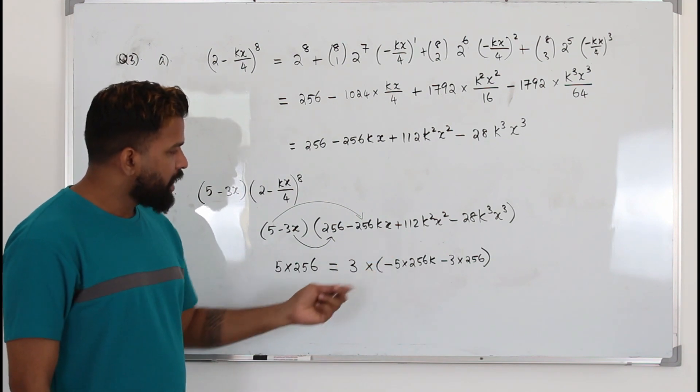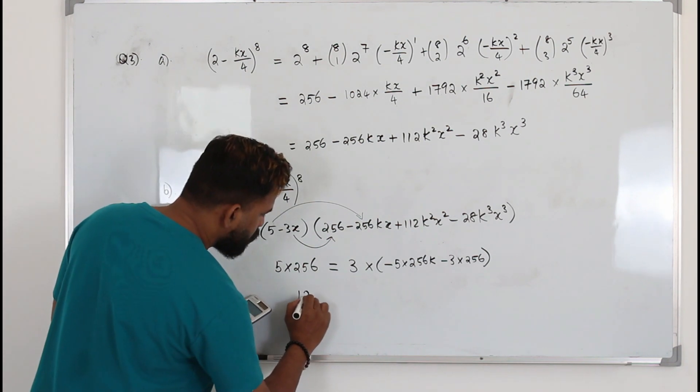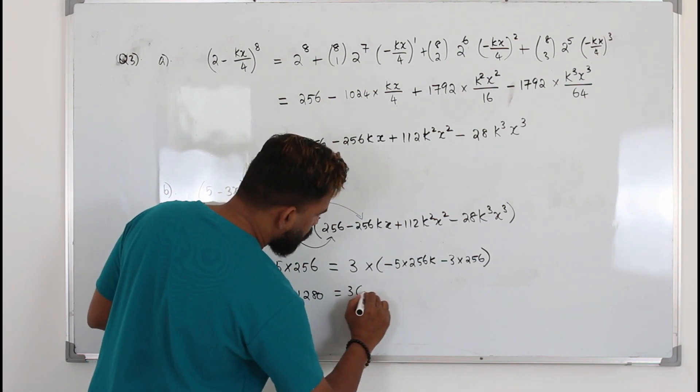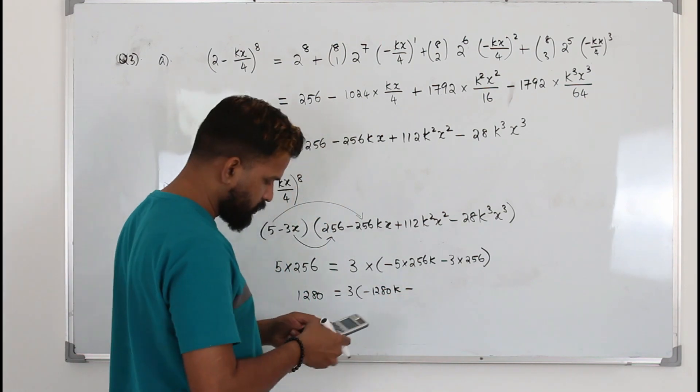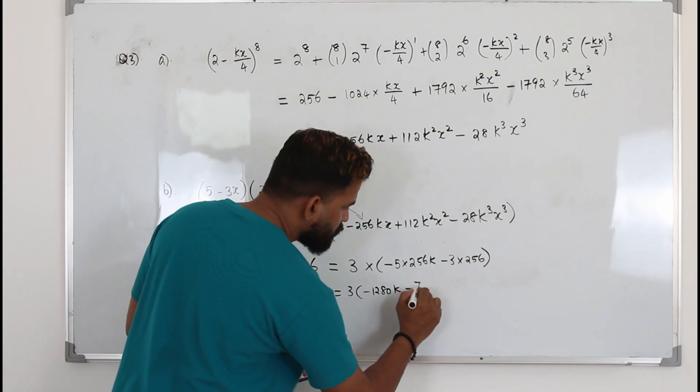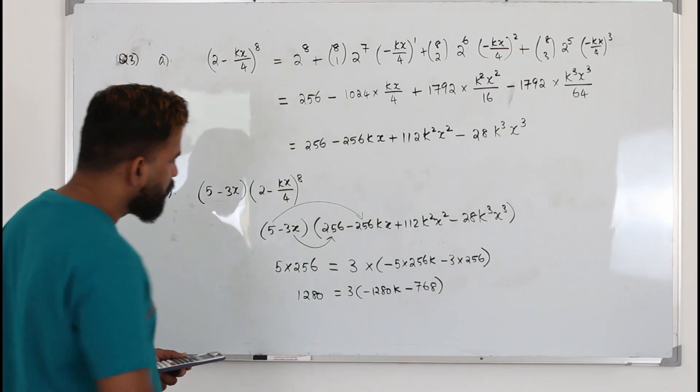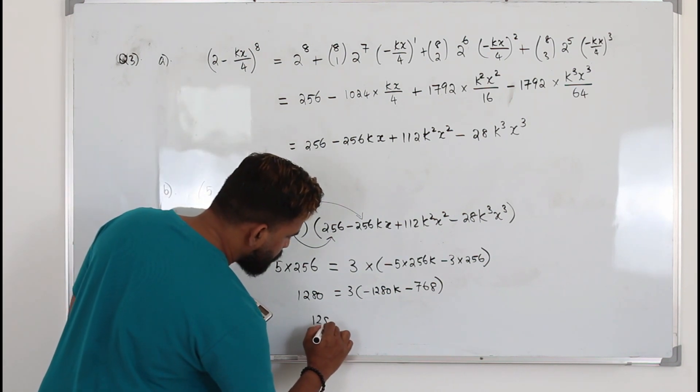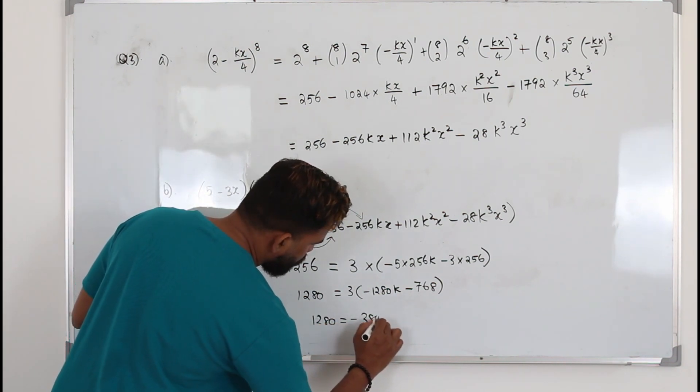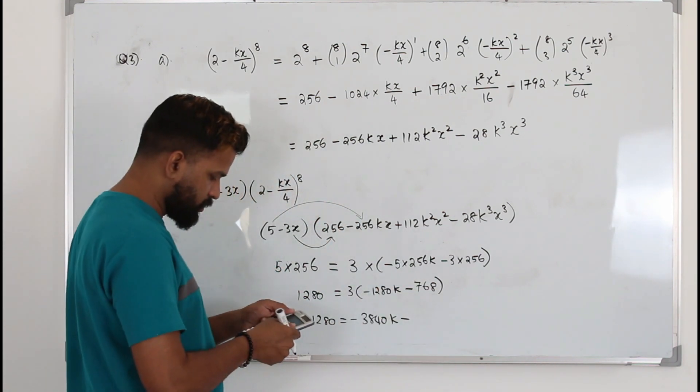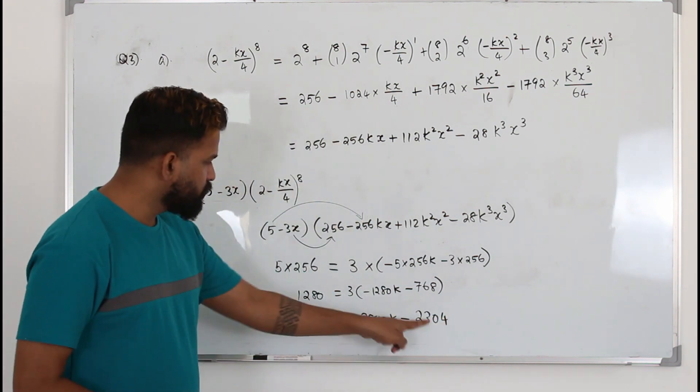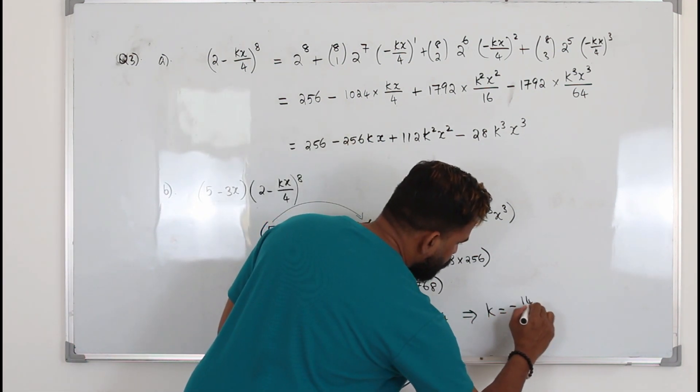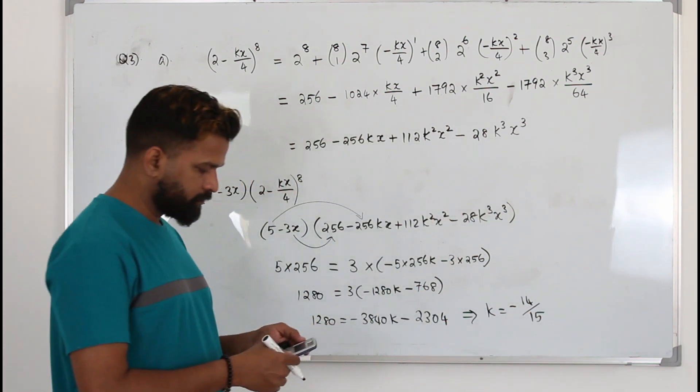Now solve this, make k as a subject, you will get the value of k. This is 1280 equals 3 times (-1280k - 768). Open the bracket and make k as a subject. So you get 1280 is -3840k and -2304. So bring the 2304 and divide by this number. So you get k equals -14/15. That's the value of k.